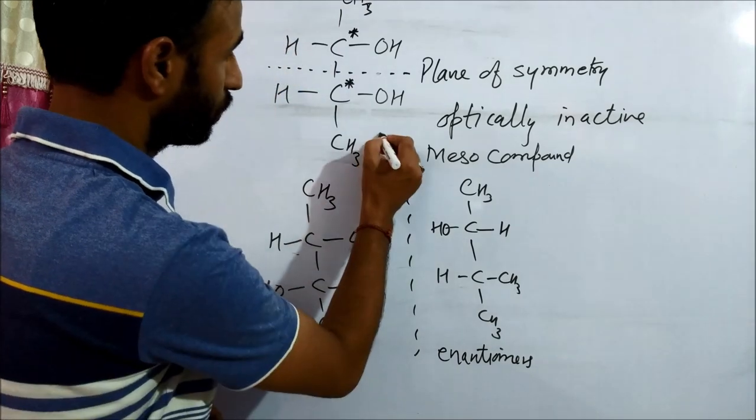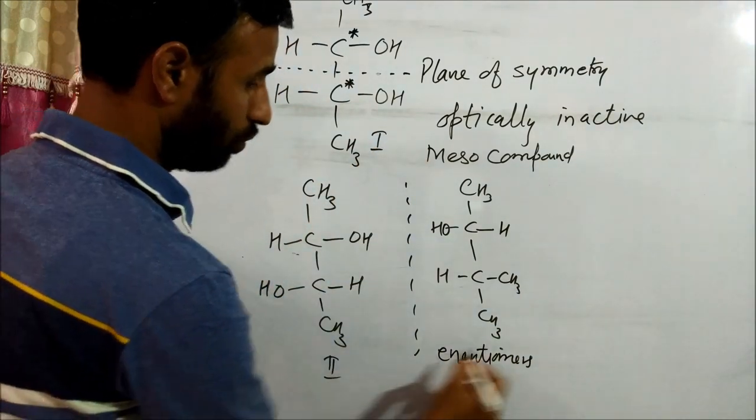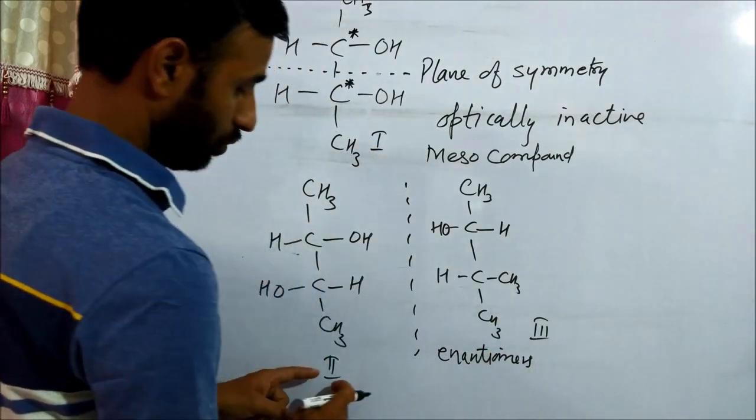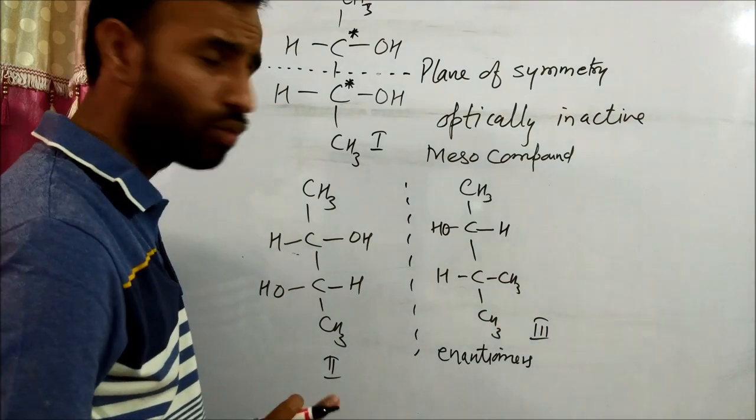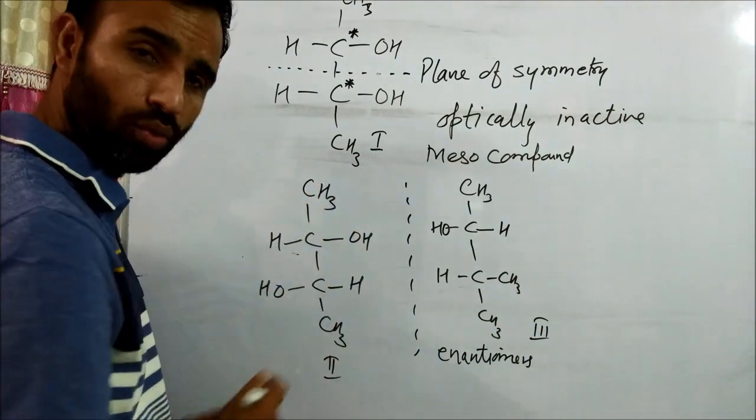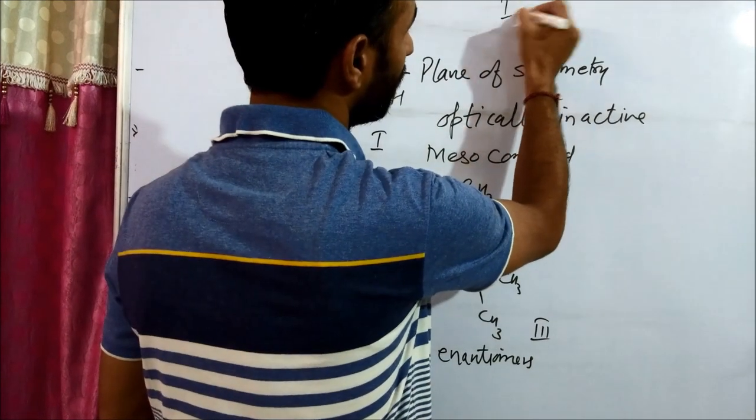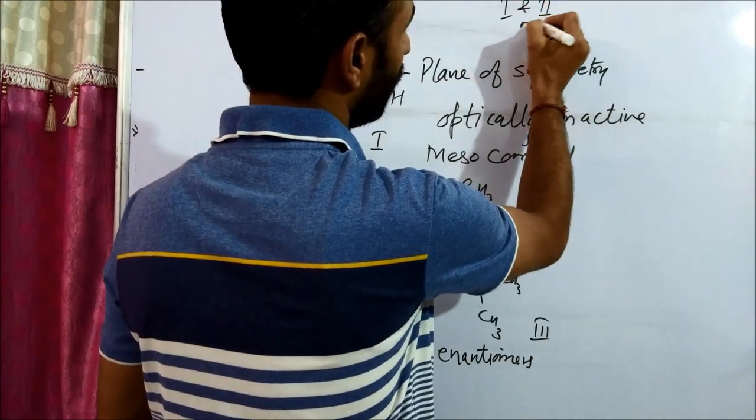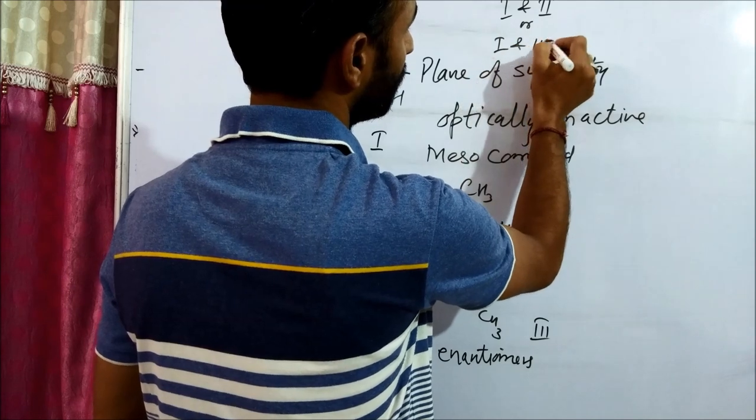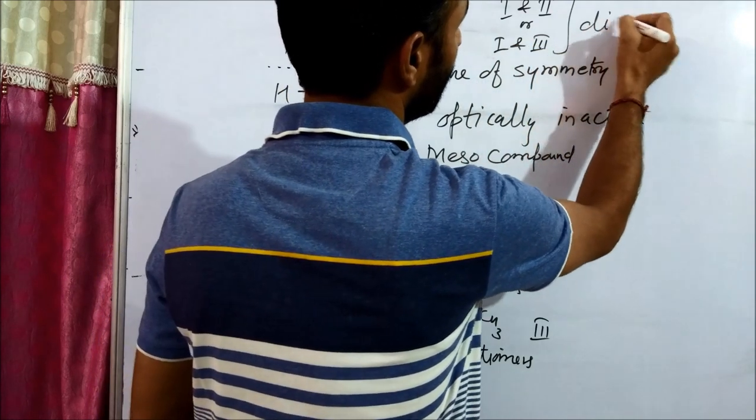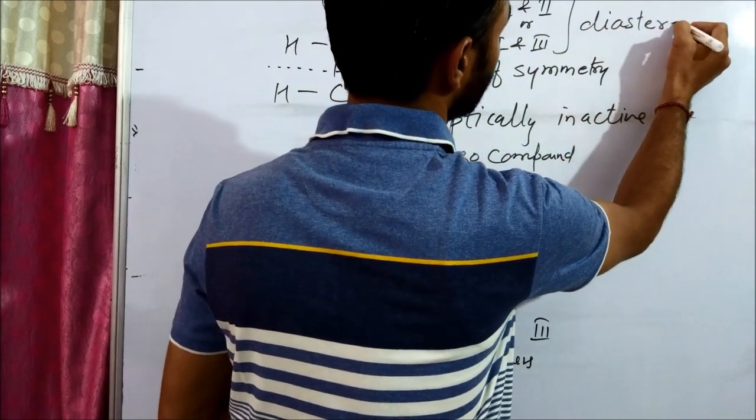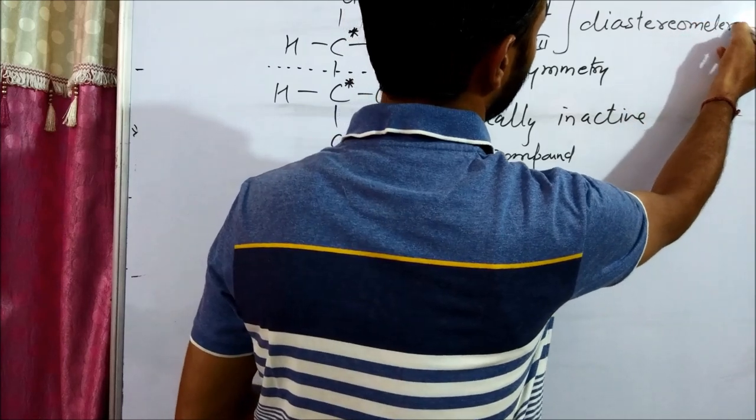So this is one, two, three. Two and three are enantiomers. So what is the relation between one and two or one and three? One and two or one and three are not enantiomers. So what is the relation between one and three?